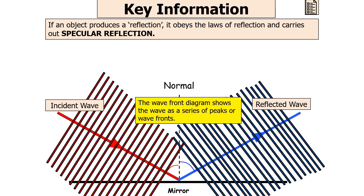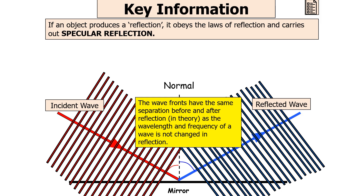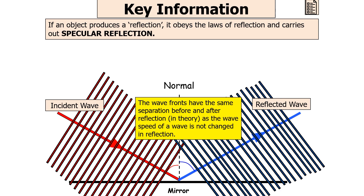The wavefront diagram shows the wave as a series of peaks or wavefronts. By definition, the distance between the wavefronts equals the wavelength of the wave, because each wavefront is a line joining points of the wave which are in phase — they can be thought of as the peak of each ripple. The wavefronts have the same separation before and after reflection, as the wavelength, frequency, and speed of a wave are not changed in reflection.